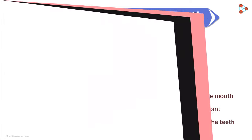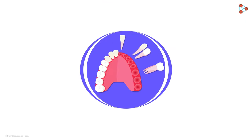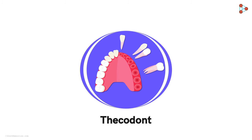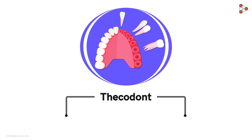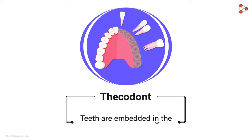In humans, for example, the teeth are firmly rooted in the sockets formed in the gums. The morphology gets a name — thecodont. This simply means the type in which the teeth are embedded in the sockets formed in the gums.